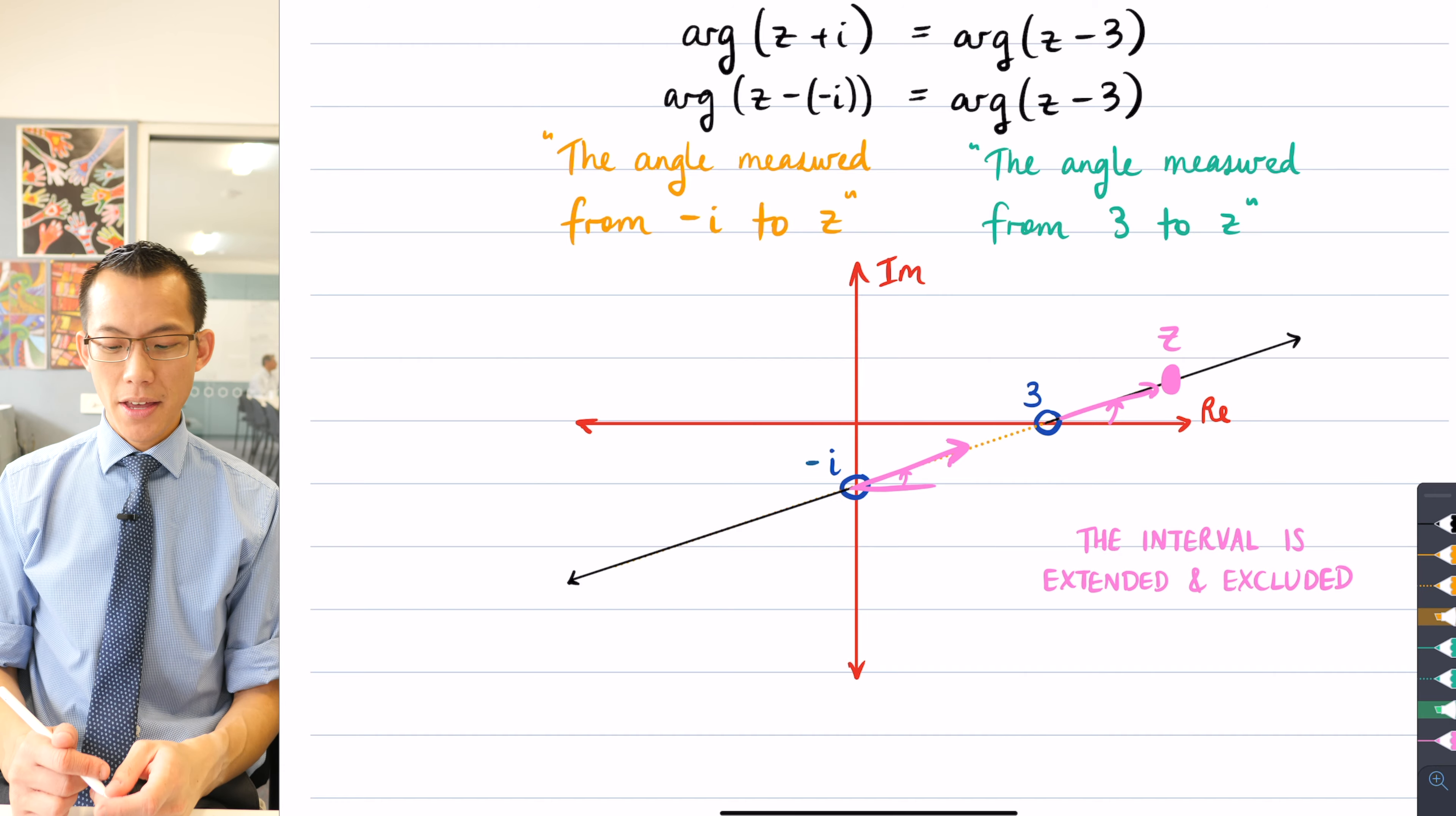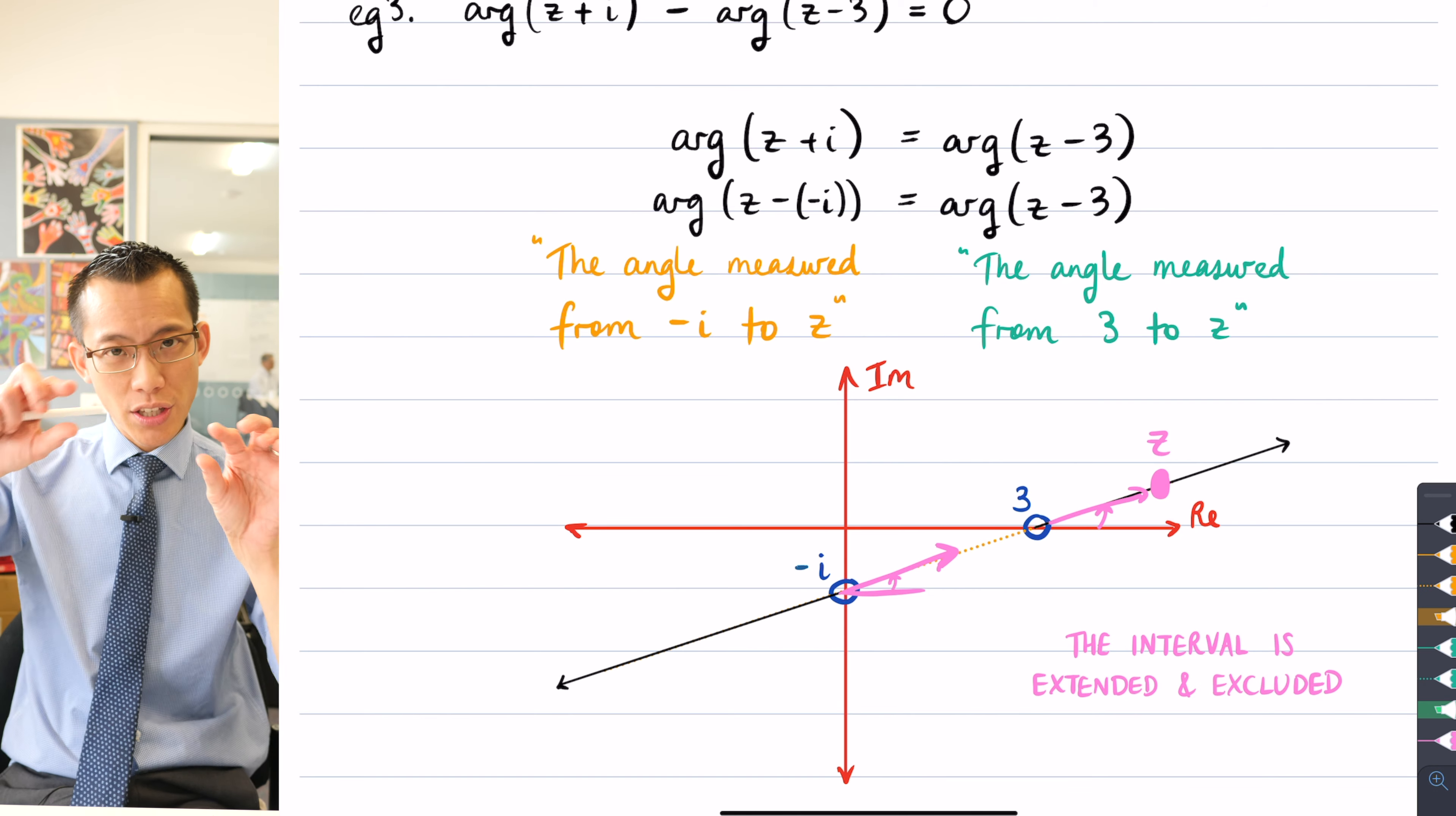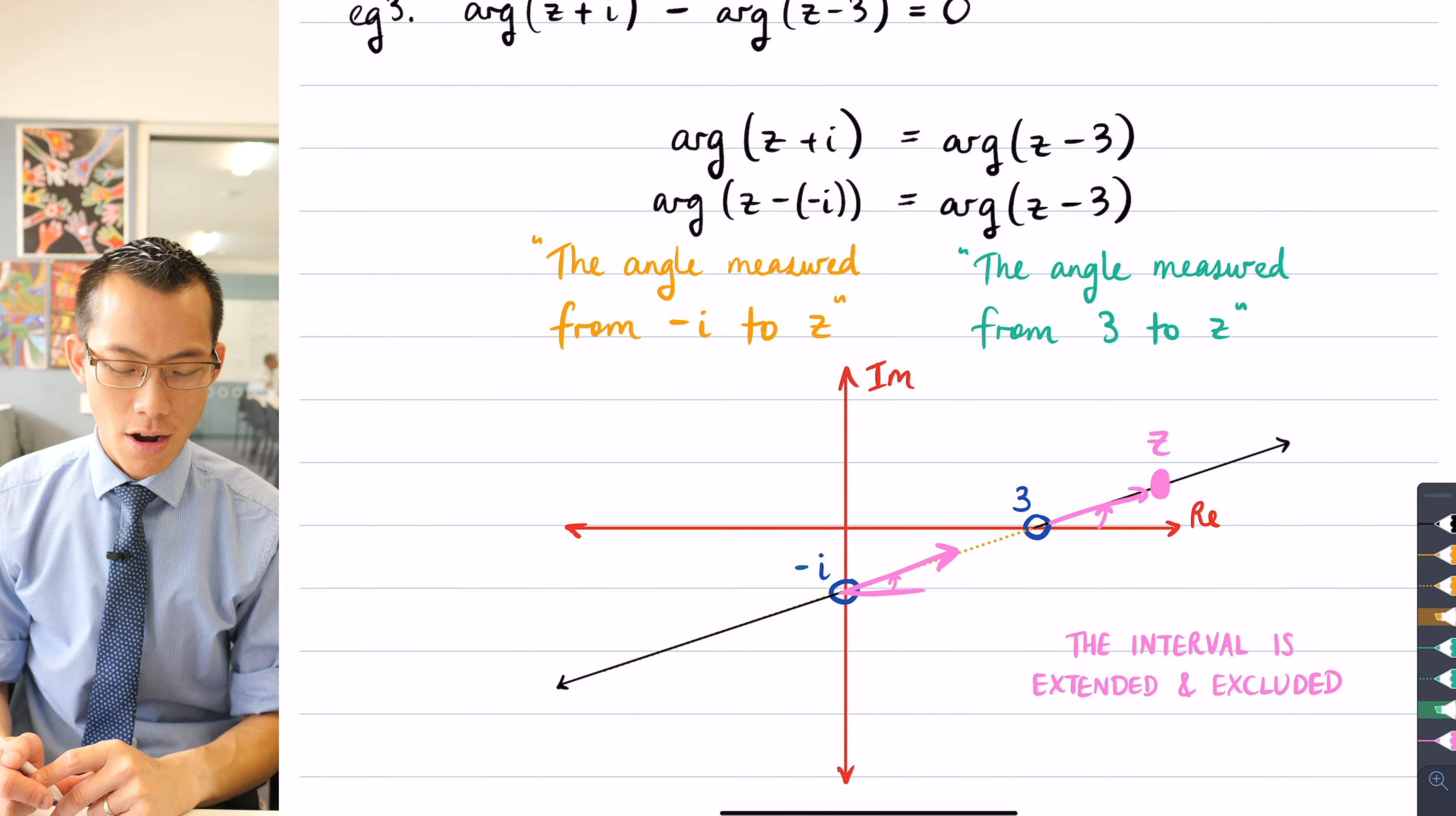So this was our conclusion. When you have something presented to you in this form, the two points here, negative i and 3 in this case, are joined by an interval. To get the set of points or the locus that is relevant to this, you extend that interval out so you end up getting these two rays. Here's one ray heading off to infinity in that direction and then here's the other ray heading in the opposite direction. You extend the interval out and then the interval itself gets excluded. It's not part of the set of points that you're after.